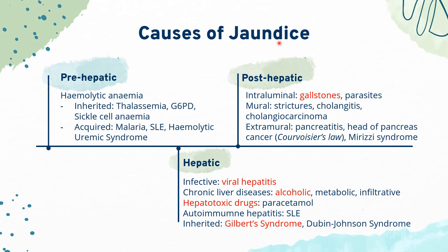Jaundice, also known as icterus, is the yellowish discoloration seen in skin, mucous membranes, and sclera when plasma bilirubin concentration exceeds a certain limit. The causes of jaundice are divided into pre-hepatic, hepatic, and post-hepatic causes. Haemolytic anaemia is a famous cause of pre-hepatic jaundice. As erythrocytes are destroyed, haemoglobin is broken down, releasing haem, which is further broken down to produce bilirubin, and jaundice arises from increased bilirubin production.